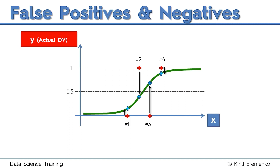From the curve we can read the probabilities by projecting to the left. Observation one is approximately 15%, observation two about 40%, observation three about 70%, and observation four about 85%. But we're not interested in probabilities right now — we want the actual y-hat, the predicted value, to see whether the model says each person will take up the offer or not. We want to assess the model and see how well it's working and whether it makes any mistakes.